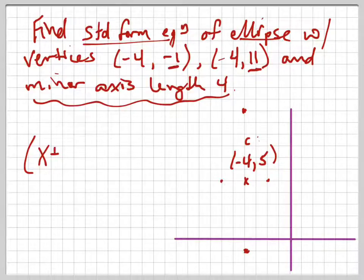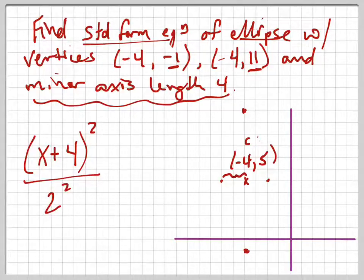So it's x plus 4, because minus a negative, squared all over, and the length of that major axis, or the length of this, is 2, so it's 2 squared. I could have written 4, but I'll write 2 squared. Plus, because it's an ellipse, it's plus,